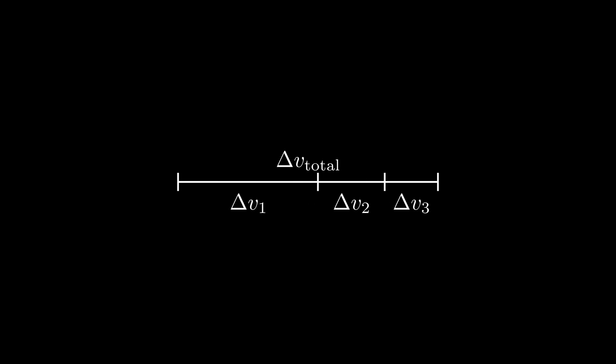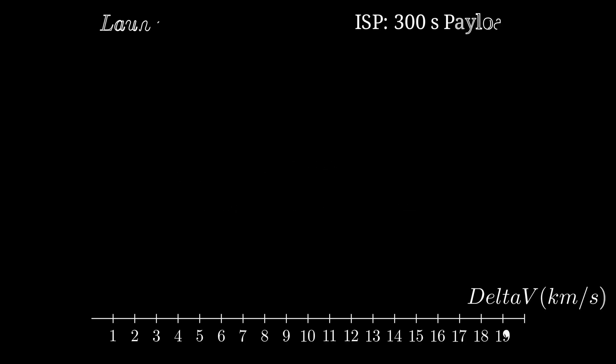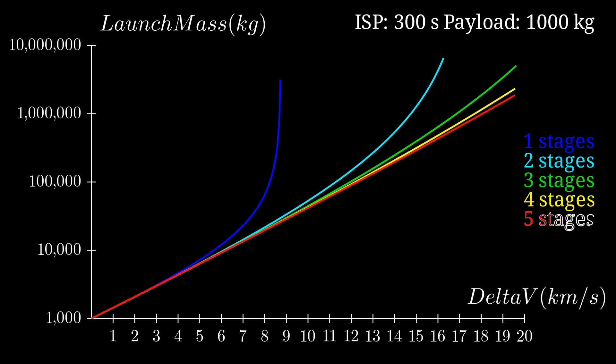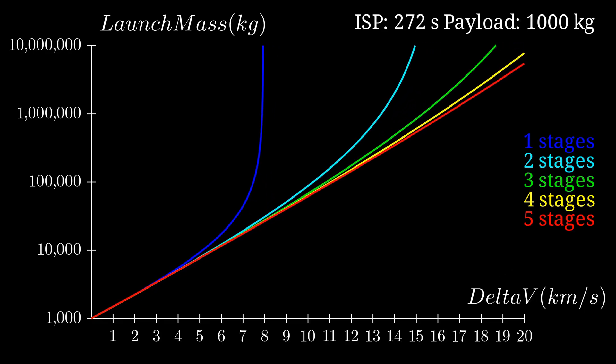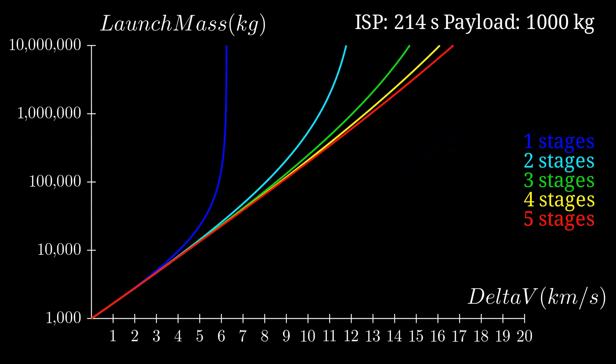Surprisingly, if all your engines have the same ISP, you just have to divide the delta v requirements evenly between the stages. And if we now plot the same graph as before for different stages, we notice that all lines initially grow exponentially.